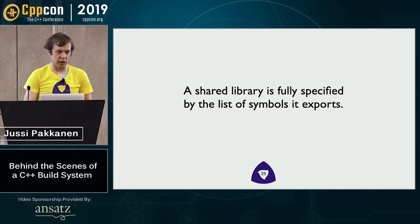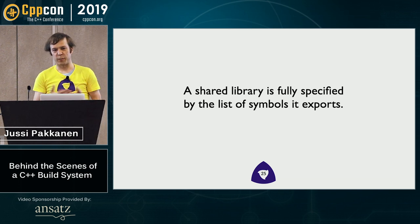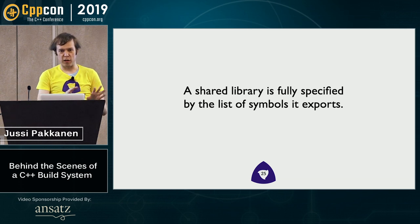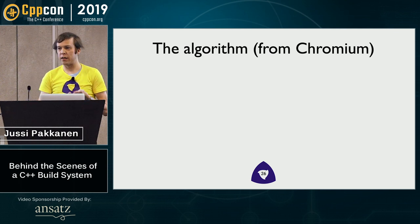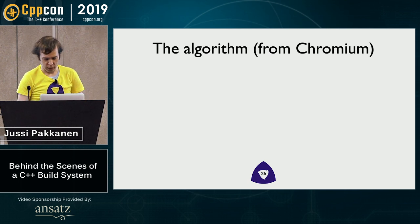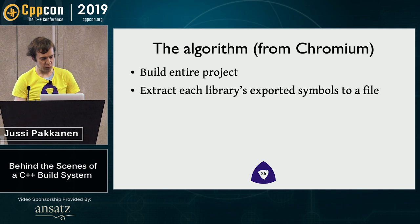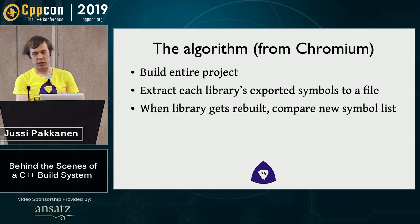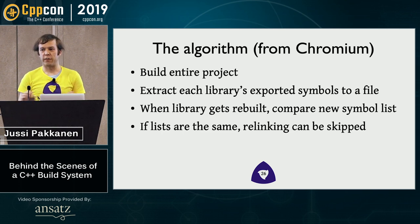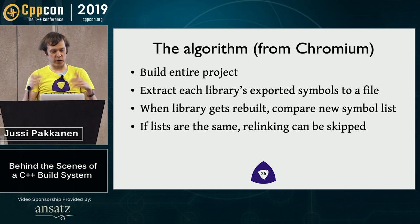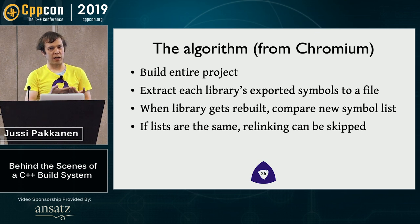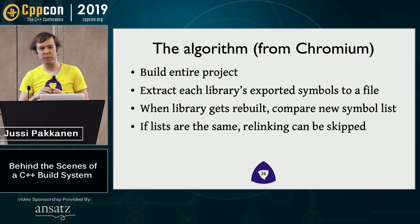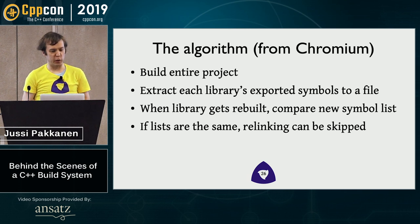How does that work? For this purpose, a shared library is fully specified by the list of symbols that it exports — the contents don't matter, but for the purpose of linking this is what matters. This algorithm is originally from Chromium. What you do is first build your entire project, then extract from each library the list of symbols it exports and put it in a file. When you do an incremental build, you extract the list of symbols again — and if it doesn't change, if the list of symbols is the same, you don't have to go any further. All things that link against this continue working; you don't have to do any relinking. If you have a library with 15 test executables, you just build the library and don't have to relink all the executables.